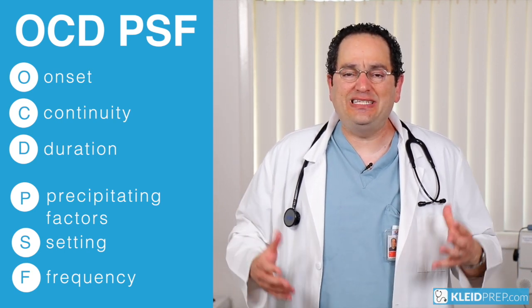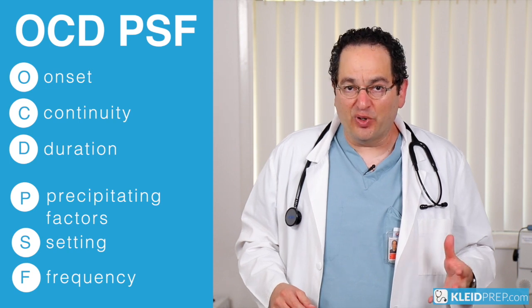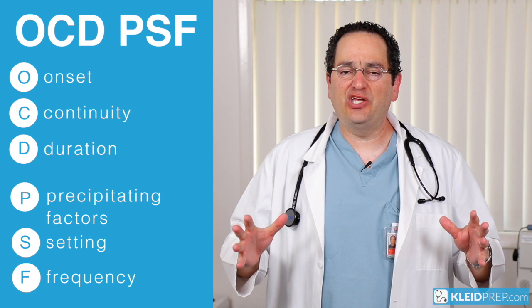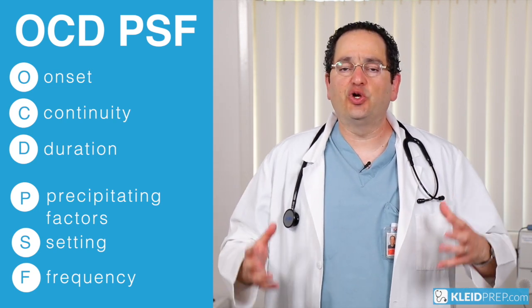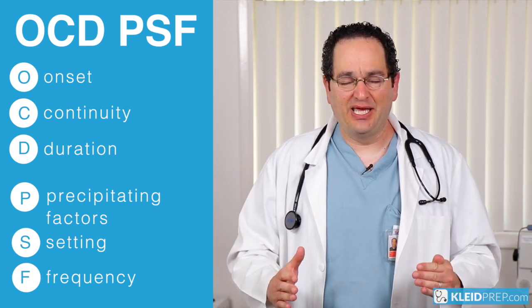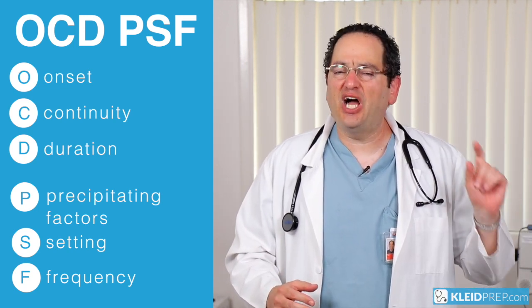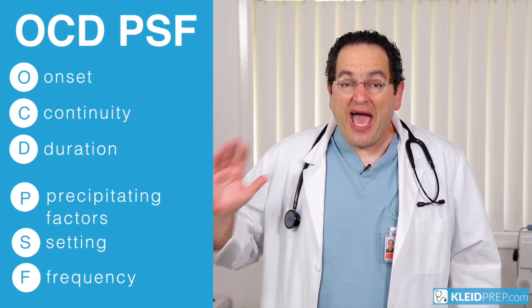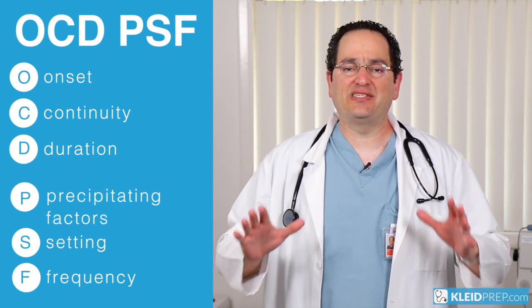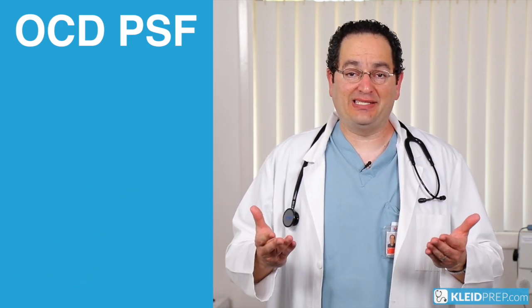So you have OCDPSF. Remember, it's onset, continuity, duration, precipitating factors, setting, and frequency. Use that simple mnemonic to take all the information you need from your patient during your history of present illness interview. It should put you in a great place to put all that information on your note. For past medical history we will be using PAM Hugs-Foss, but for history of present illness it's OCDPSF. Use it and enjoy it.